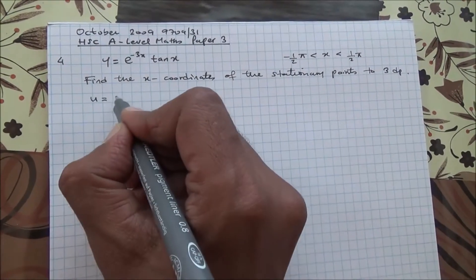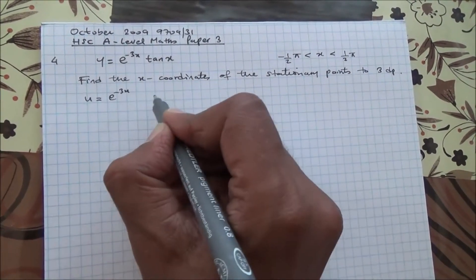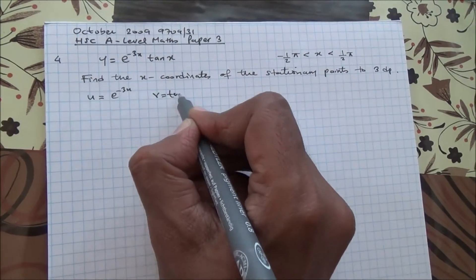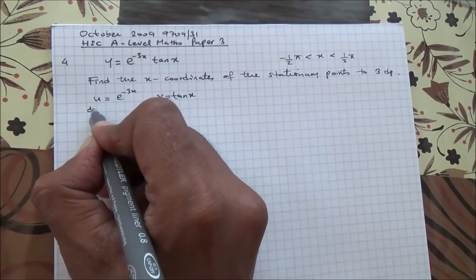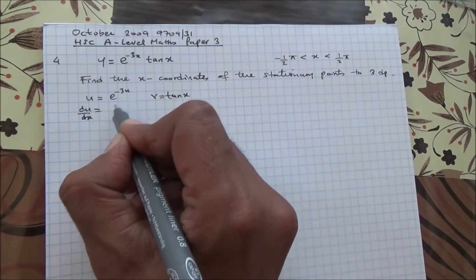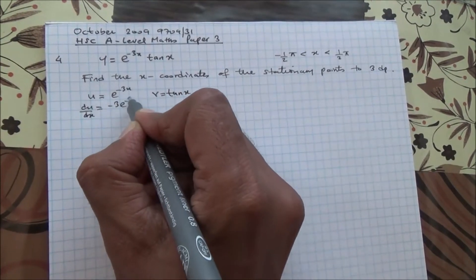Now, we can call u equals e to the power of minus 3x and v equals tan of x. So, du by dx, you should know, is equal to minus 3 e to the power of minus 3x.